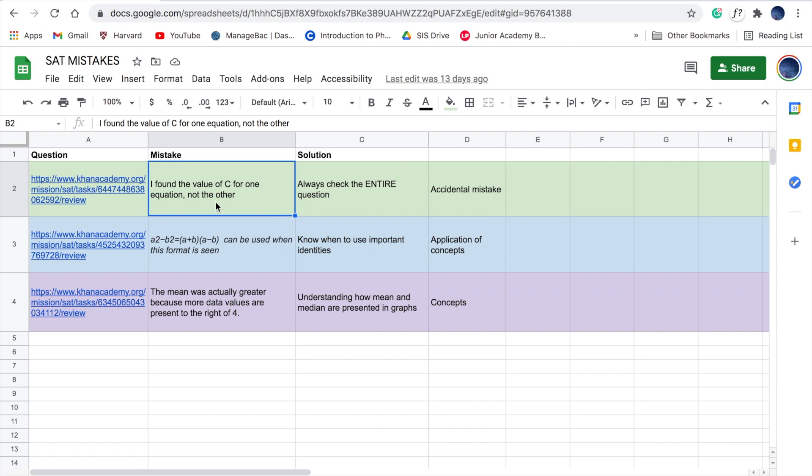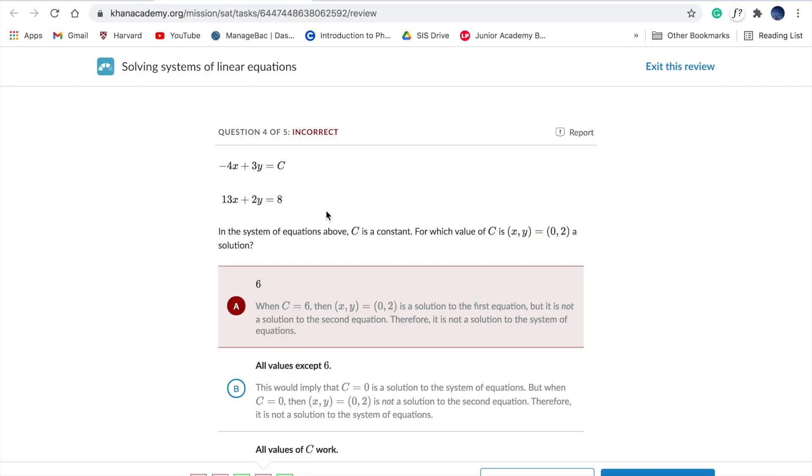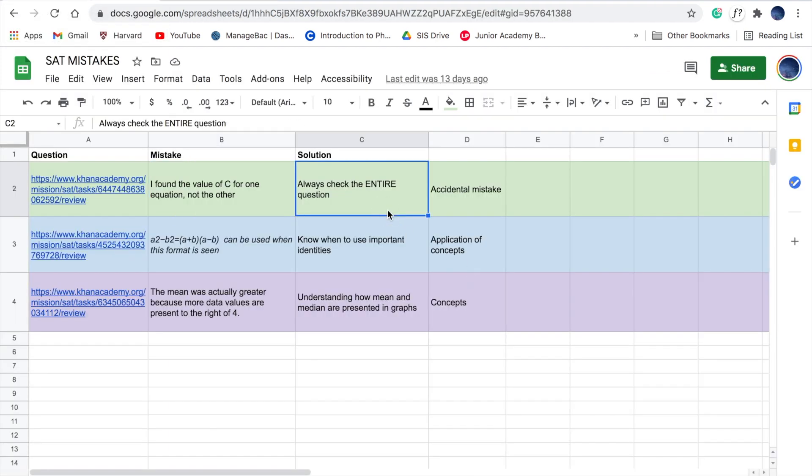So for example, in this question, I found the value of C that solves equation 1, but I didn't check if the value actually applies to equation 2. In the third column, I write down a specific solution as to how I'm going to avoid the mistake in future. So here I would have written, always check the entire question. This means that when I'm done with the question, I will go back, read the entire question, and make sure that I've solved everything that's asked.